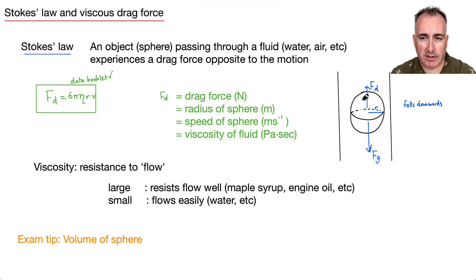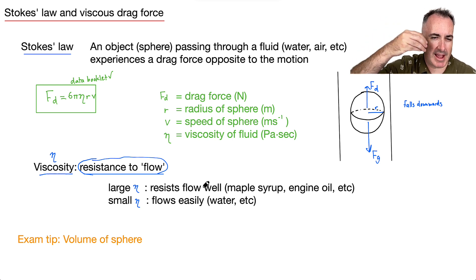Let's talk more about viscosity. Viscosity is this eta here. Viscosity is all about resisting flow. I could see an exam question asking you something like that. If you have a high viscosity value, you resist the flow well—something that's really thick that doesn't flow very fast, like maple syrup or engine oil. A small viscosity means something flows easily, like water.